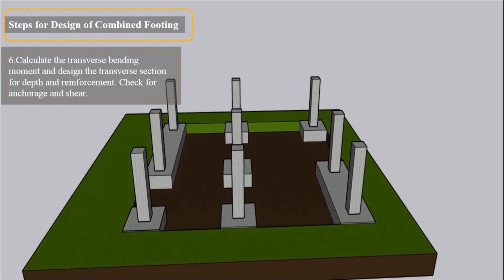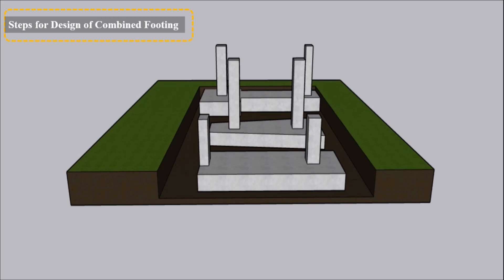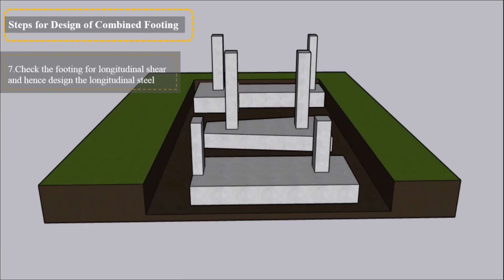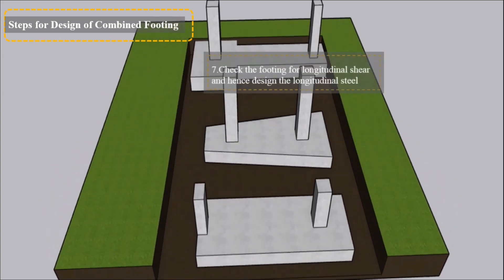6. Calculate the transverse bending moment and design the transverse section for depth and reinforcement. Check for anchorage and shear. 7. Check the footing for longitudinal shear and hence design the longitudinal steel.